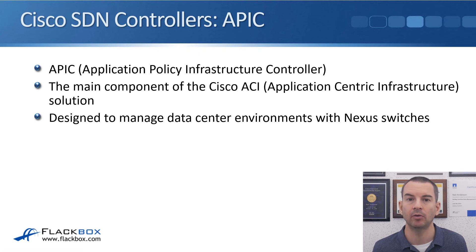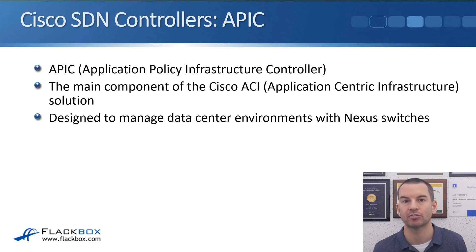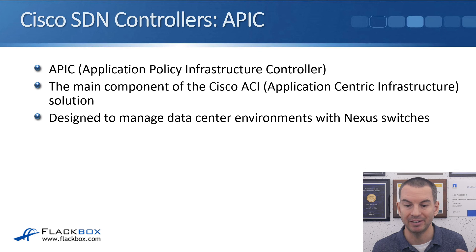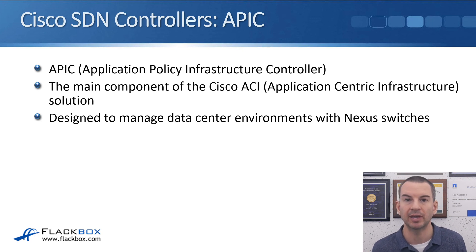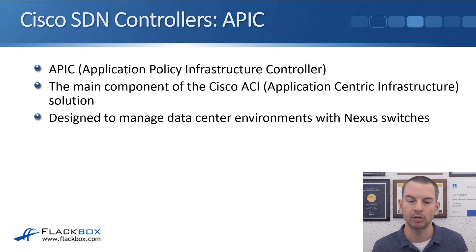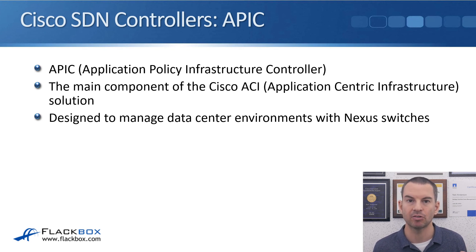Let's look at what SDN controllers are available from Cisco. First is the APIC — Application Policy Infrastructure Controller — which is the main component of Cisco ACI, Application Centric Infrastructure. The APIC is designed to manage data center environments with Nexus switches. In an IT environment, the data center hosts your higher-end devices and all your services, so you want high performance there. The data center is often the first place new technologies are implemented, which was the case with Cisco SDN. If you have a Cisco-based data center using Nexus switches, you can control it with SDN using the Cisco APIC.